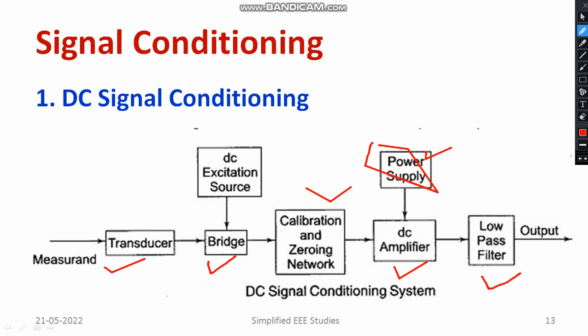The input quantities may be torque, pressure, or similar physical quantities. With the help of a transducer, the non-electrical quantity is converted into an electrical quantity, and the electrical output is then connected to a bridge circuit. The output of the transducer may be AC or fluctuating in AC form. Using the bridge network, it converts AC to DC. The bridge network is powered with a DC excitation source.